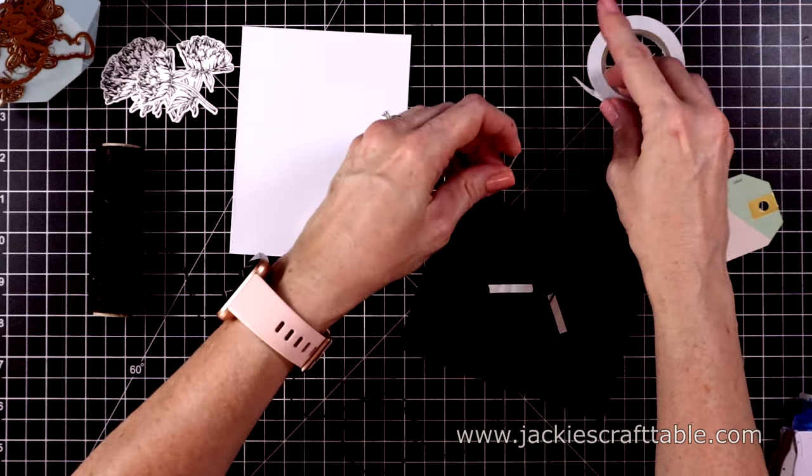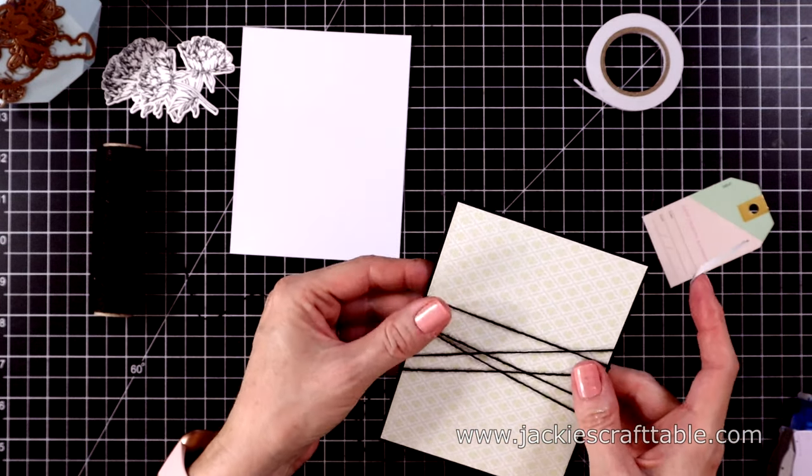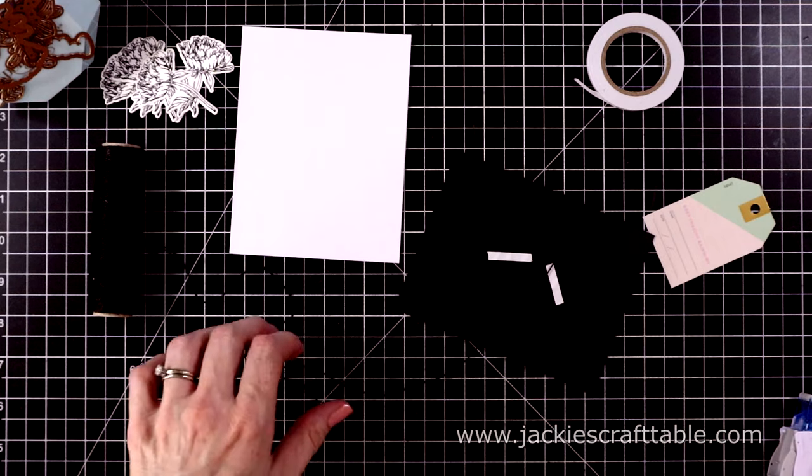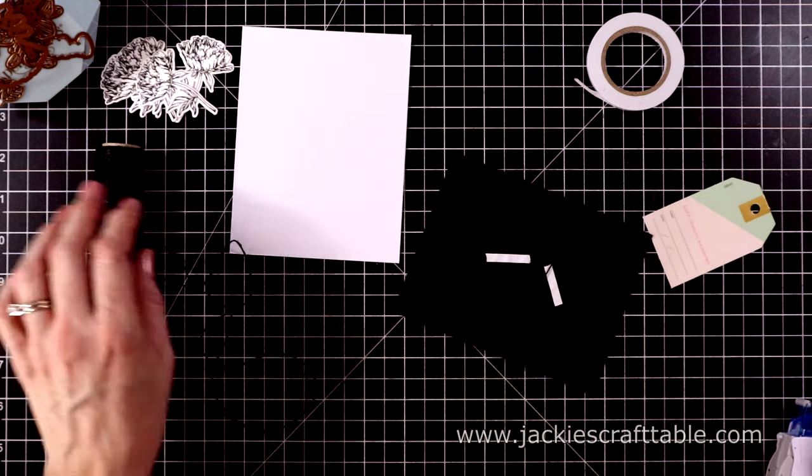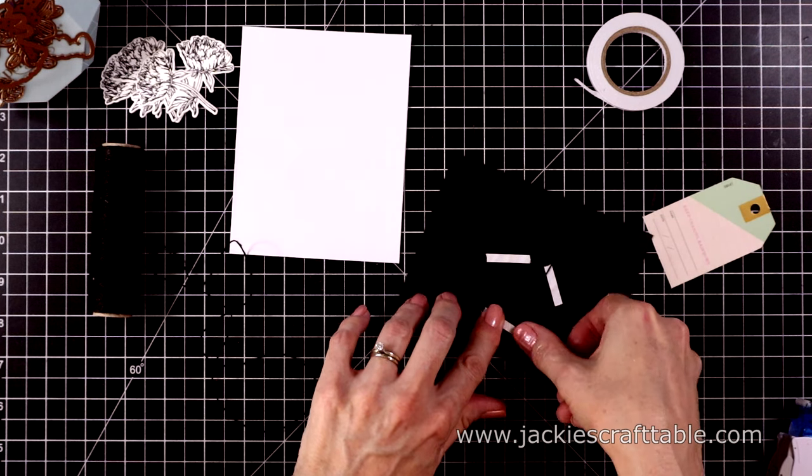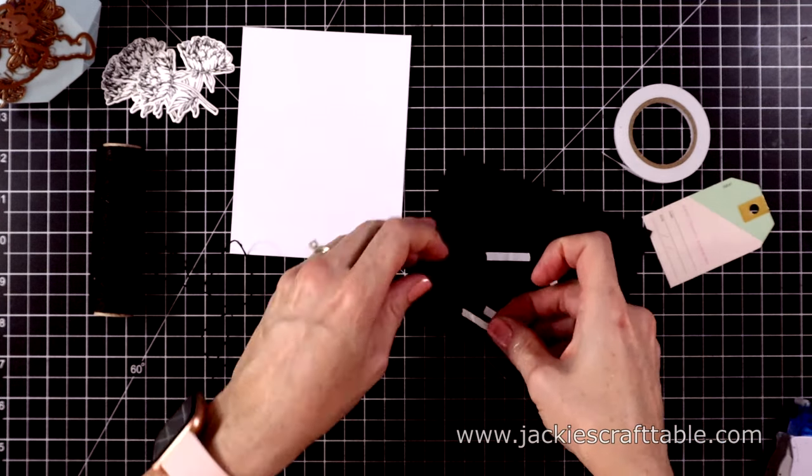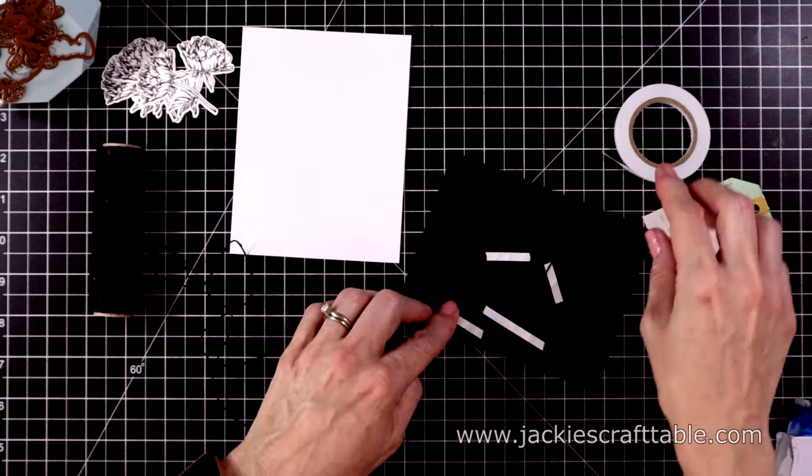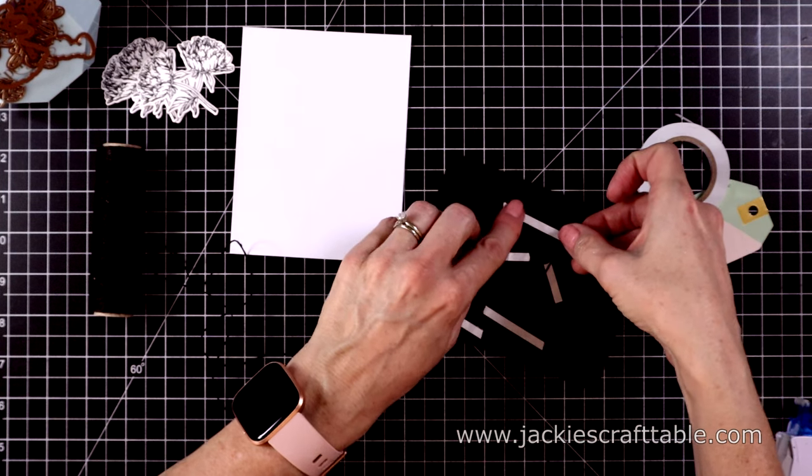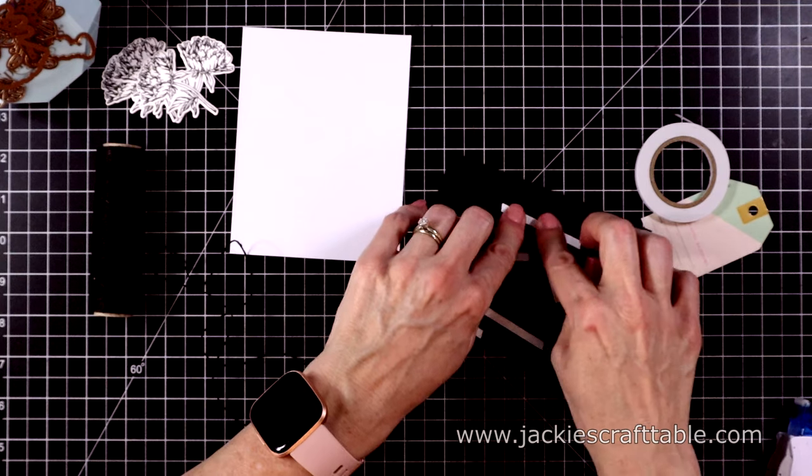So I'm going to adhere it in place with some of the double-sided adhesive. I wrapped it around several times. Isn't that pretty? And then I'll go ahead and add a little bit more double-sided adhesive over these strings. This will just make sure it stays in place.